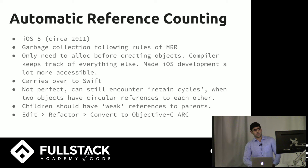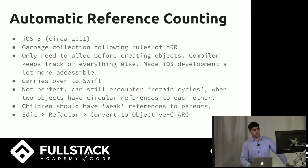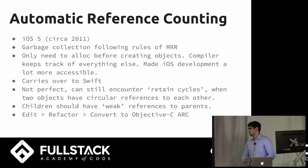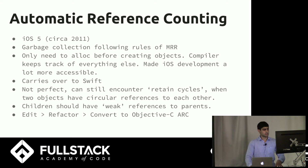In 2011, they came up with Automatic Reference Counting, which is a form of garbage collection based on those rules. The only method that still remains from those is alloc, and that carries over to Swift. It's not perfect — you can still have circular references between a parent and child, causing a memory leak. So children should always have weak references to their parents.